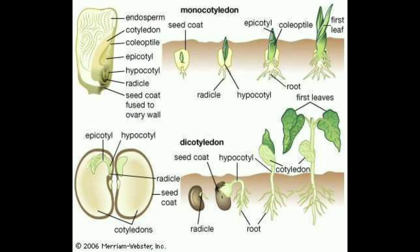Cotyledon is the first leaf, or one of the first pair of leaves, developed by the embryo of a seed plant. Angiosperms are broadly classified into two groups: monocotyledons and dicotyledons. Plant seeds with only one cotyledon are monocots; plant seeds with two cotyledons are dicots. Example: paddy is a monocot; tamarind is a dicot.